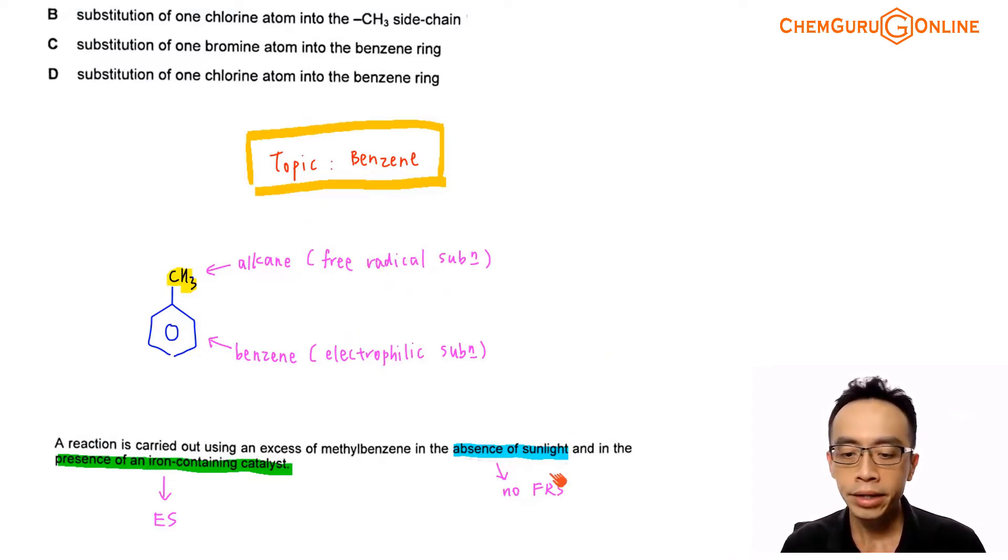Absence of sunlight, there will not be any free radical substitution. In the presence of an iron-containing catalyst, this should remind us of iron chloride, FeCl3 or FeBr3. Then I will have the catalyst that is used for electrophilic substitution of benzene. So the only reaction that we will be considering here will be involving electrophilic substitution of benzene.